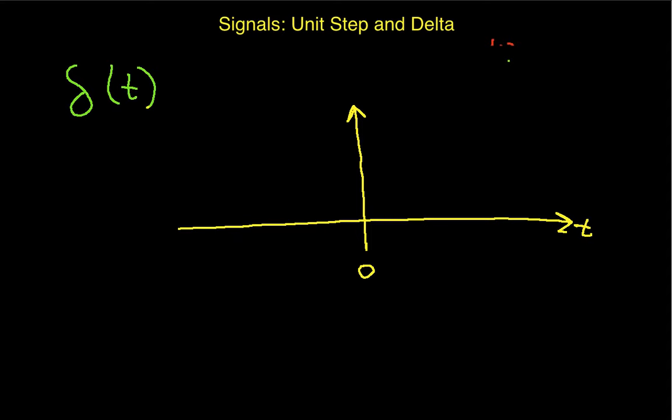Suppose I start off with a function that goes up at some point, stays at some value and goes back down. Let's say it goes up at minus epsilon, goes back down at plus epsilon, and it has a height of 1 over 2 epsilon, where epsilon is some arbitrary number.